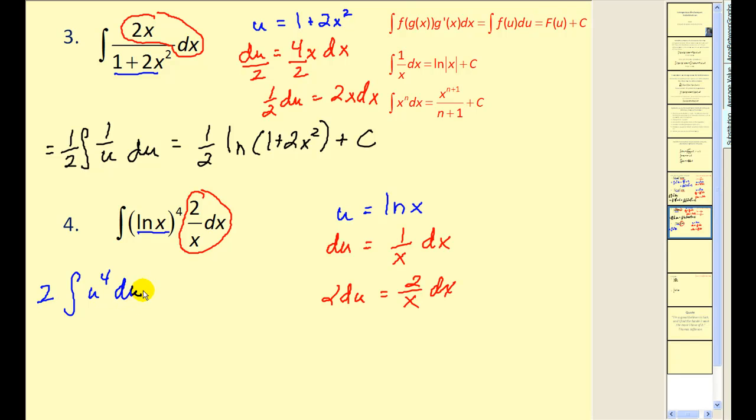To factor the two out, we have du there. So the antiderivative would be 2 times u^5 divided by 5 plus c, which is equal to (2/5)(ln x)^5 plus c.